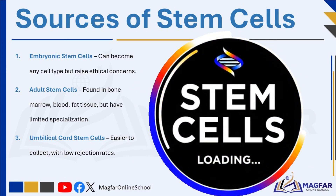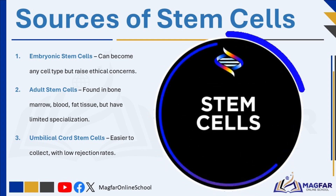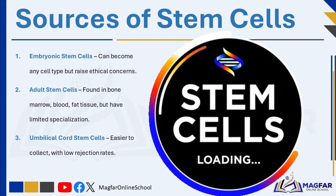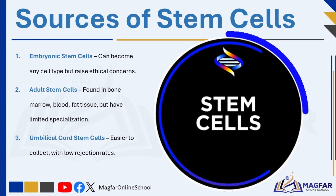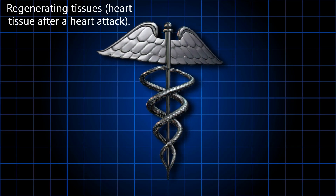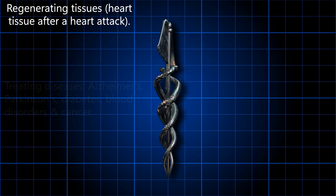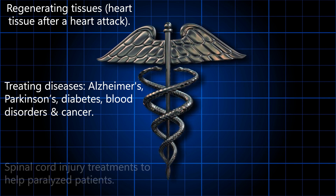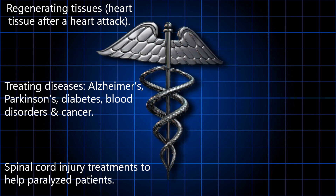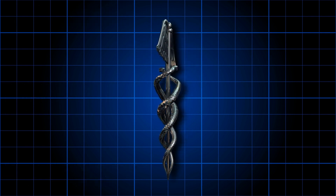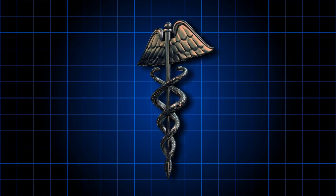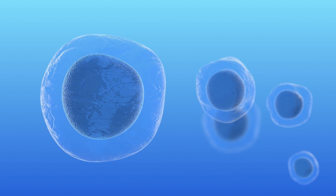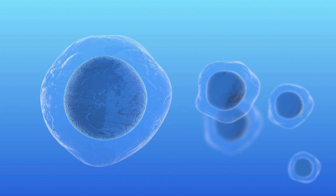Thirdly, umbilical cord stem cells are harvested from the blood in the umbilical cord when a baby is born. These cells are easier to collect and less likely to be rejected in medical treatments. Stem cells are used in various medical treatments and research, including regenerating damaged tissues and organs — for example, repairing heart tissue after a heart attack — developing treatments for diseases like Alzheimer's, Parkinson's, and diabetes, and treating injuries to the spinal cord, which may help paralyzed patients regain movement. However, stem cells in older adults may be damaged due to disease, making them unsuitable for medical use, and the number and quality of stem cells decrease with age, limiting their effectiveness.